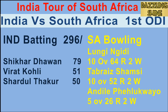Third ball of the eighth over, Jensen to Dhawan — it's a short ball and Dhawan pulls it to the square leg boundary for four. The fifth ball is even shorter, and Dhawan gets on top of it and cuts it over cover for four runs.